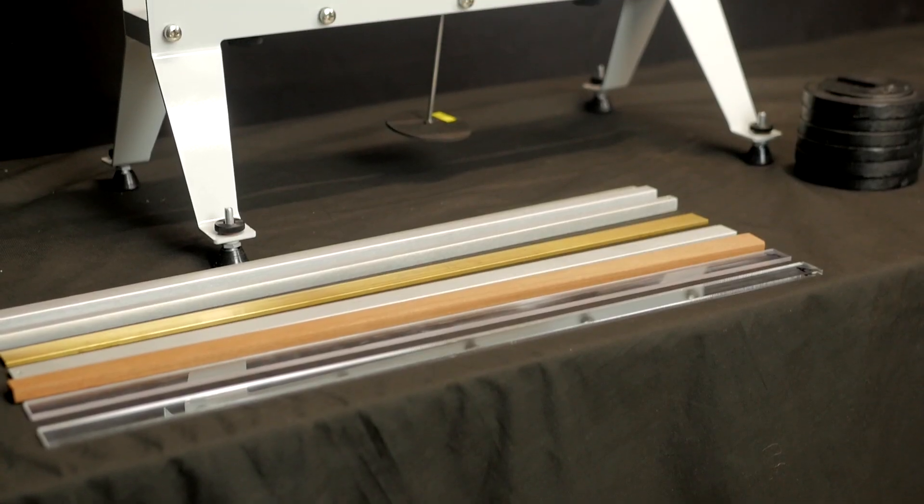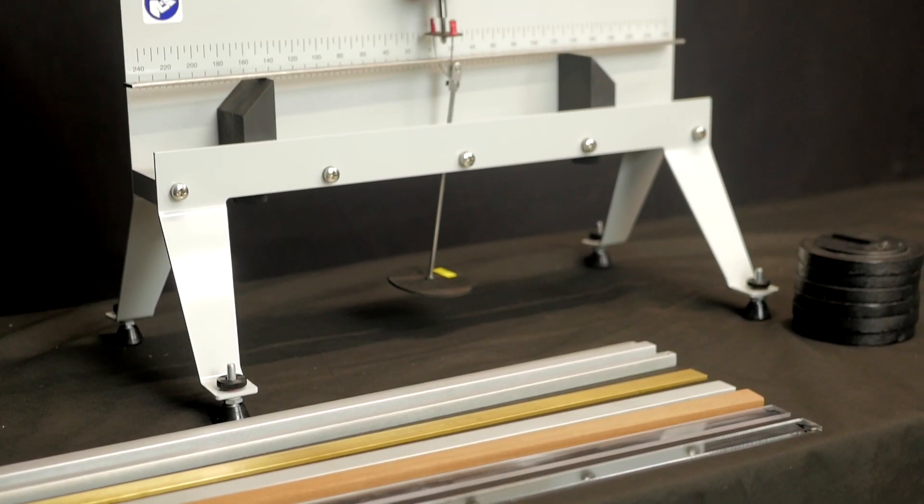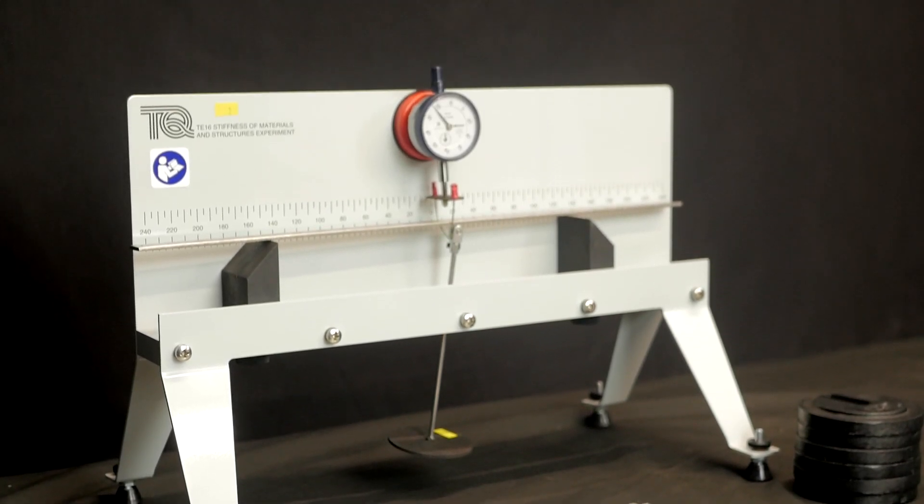Let's take a look around the stiffness, bending and torsion experiment. The main part is a rigid metal frame that is 500mm long by 250mm and 350mm. You'll need a solid bench space of half a metre by half a metre.